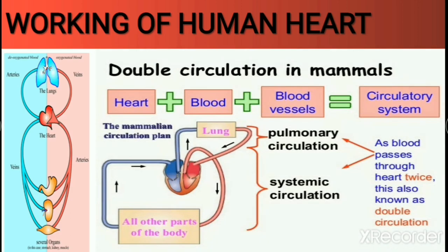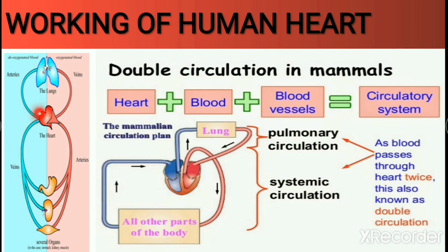From the heart, the pure blood again goes to all body parts, where oxygen is taken and carbon dioxide is added, making the blood impure again. That impure blood comes back into the heart, which sends it for purification again — and this cycle repeats. You can see that the same blood enters the heart two times in one complete round. That is why the circulation in our body is called double circulation.